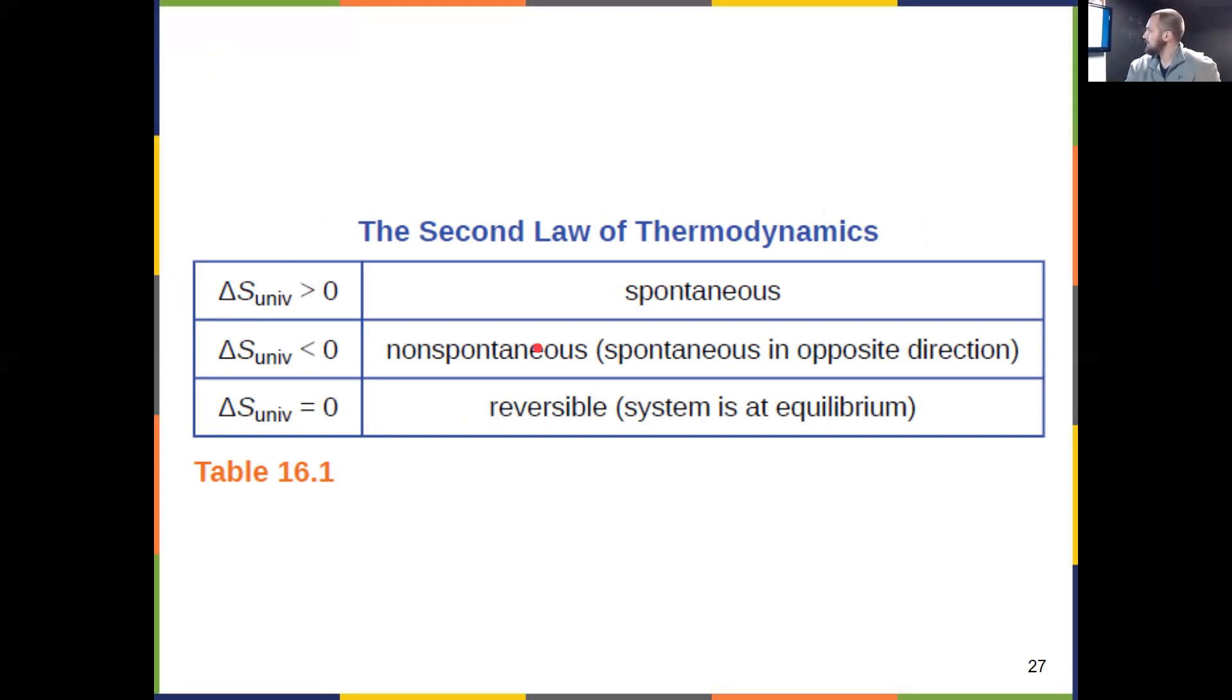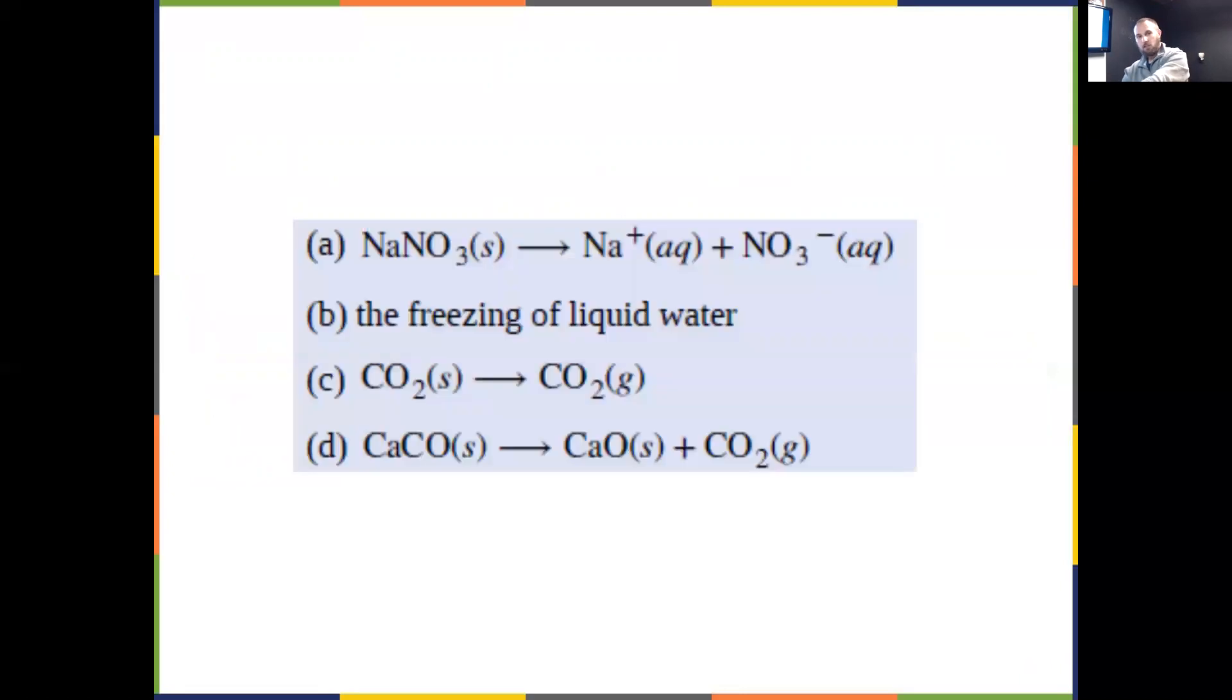In the rare situation that ΔS_univ equals exactly zero, that's where we have our system at equilibrium in a reversible process. Here's a nice place to pause and check your understanding: think about entropy for these four processes and whether the entropy of the universe is increasing. Think about these, then click to resume.